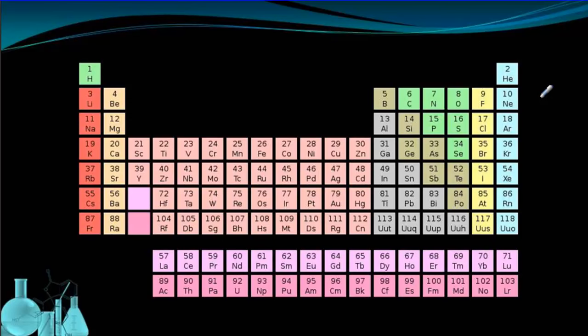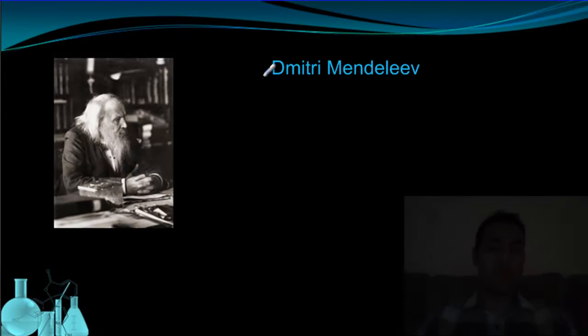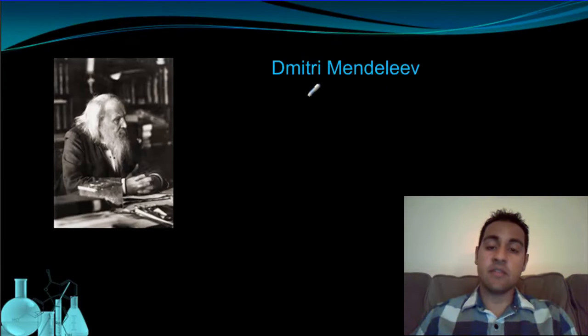Back when the very first periodic table was created, we didn't know of all 118 elements. In fact, they only knew of 63 when the very first one was put forward. And the guy that did work on that was named Dimitri Mendeleev. He's a chemist that was credited with the very first periodic table. And we're going to take a look at what he came up with as the very first one.